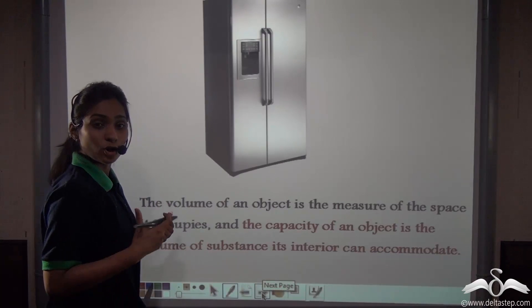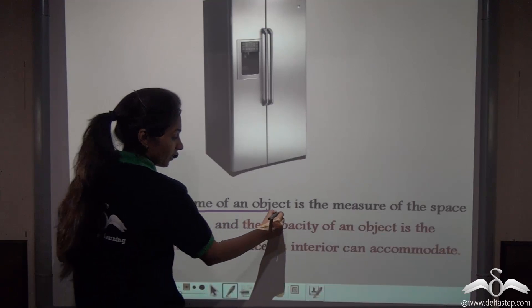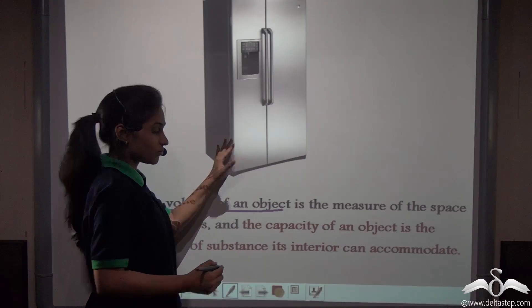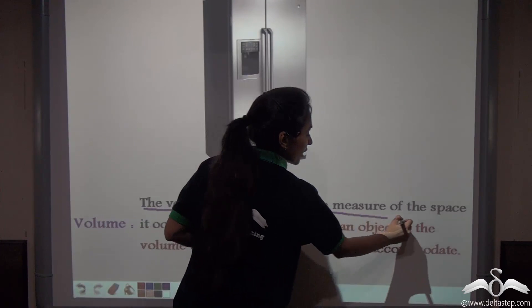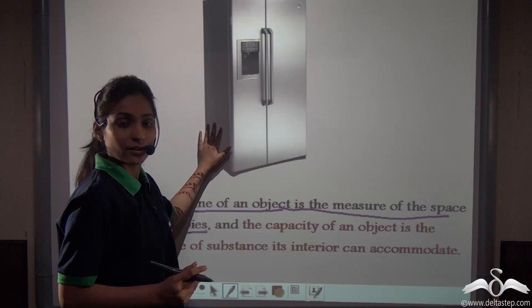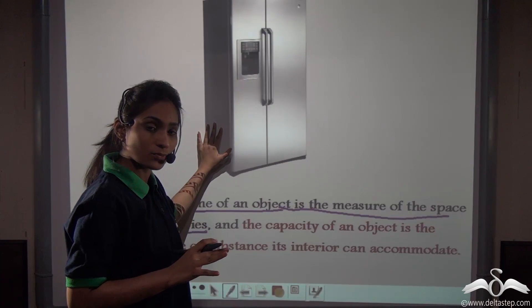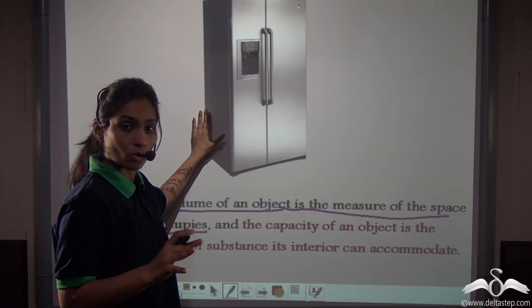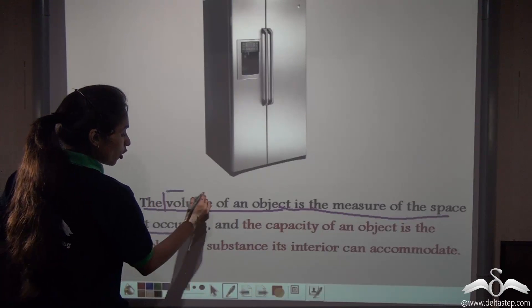Now what is this volume of the refrigerator? The volume of an object—here refrigerator is the object—is the measure of the space it occupies. This refrigerator occupies some space in our homes, and what space it will occupy in your homes will be known as its volume.